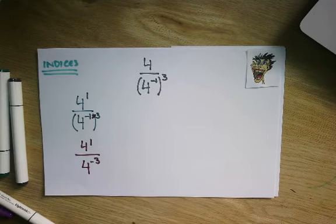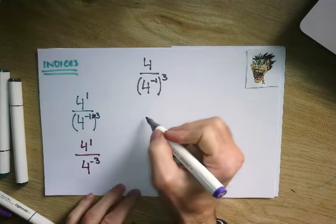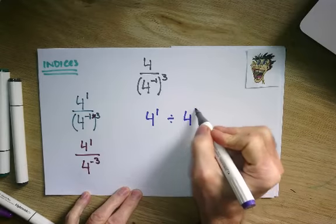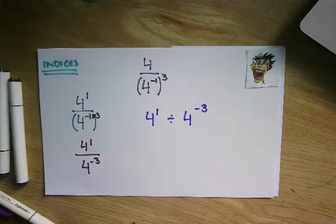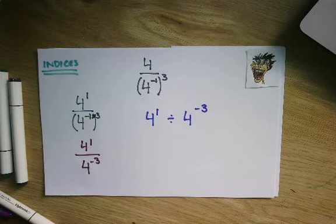Now, once you've done that, it's division. So it's 4 to the 1 divided by 4 to the minus 3. And what you've got to be aware and careful of with this one is actually the negatives.